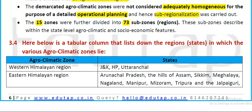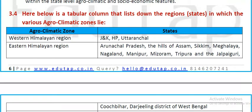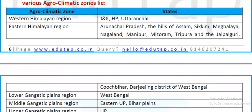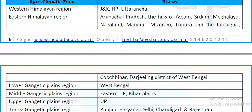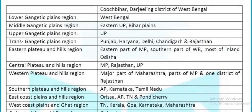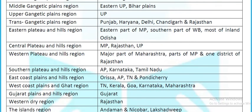The tabular listing of regions in agro-climatic zones: Western Himalayan region includes Jammu & Kashmir, Himachal Pradesh, and Uttarakhand; Eastern Himalayan region includes all northeastern states, Jalpaiguri of West Bengal, and Koch Bihar; Lower Gangetic Plains — West Bengal; Middle Gangetic Plains — Bihar and eastern UP; Upper Gangetic Plains — UP; Trans-Gangetic Plains — Punjab, Haryana, Delhi, Chandigarh, and Ganganagar in Rajasthan.